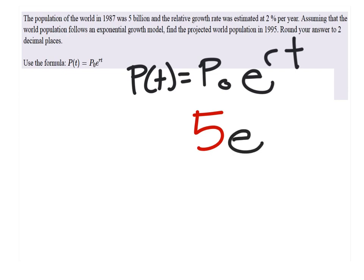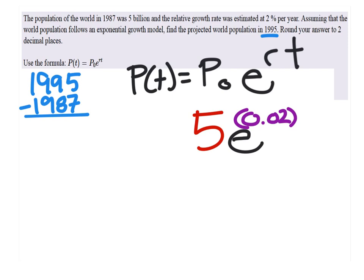Have e to the power of the rate, which is 2%. And then the time. So we want to know what's going to be in 1995. So 1995 minus 1987 will tell us the time. Eight years.